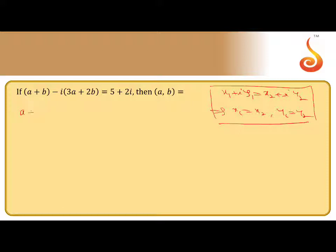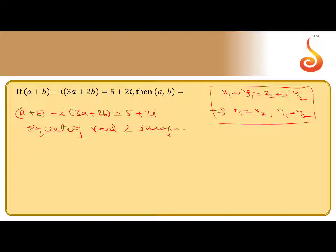This is a plus b equal to 5 plus 2i. So equating real and imaginary parts, we get: a plus b equal to 5, and minus of 3a plus 2b equal to 2, that is 3a plus 2b equal to minus 2.